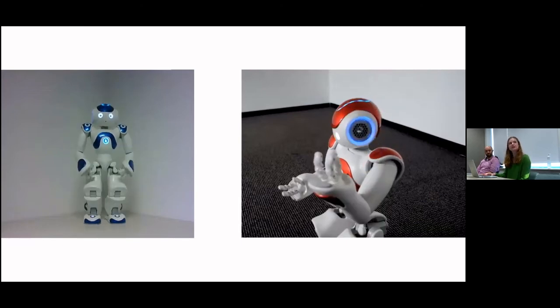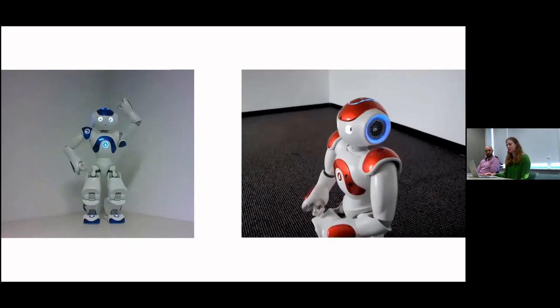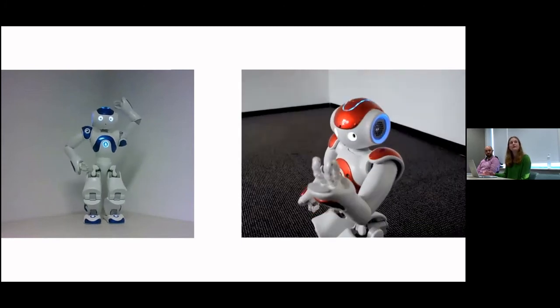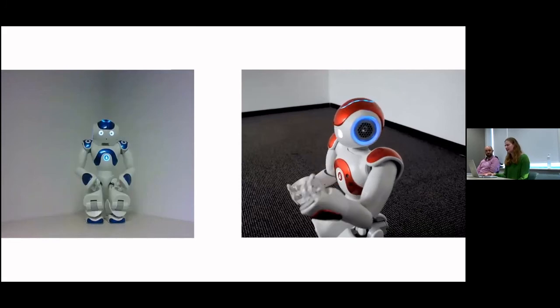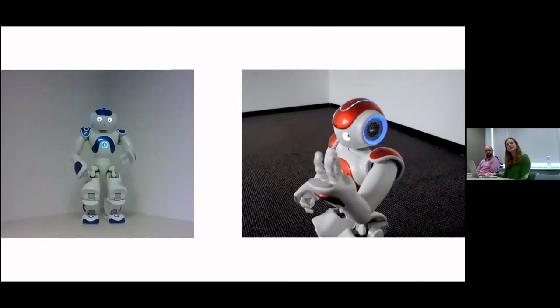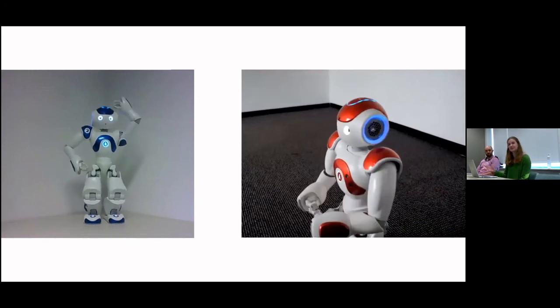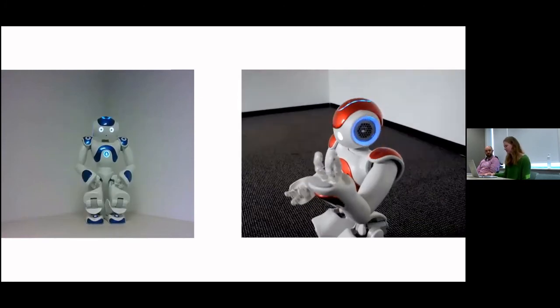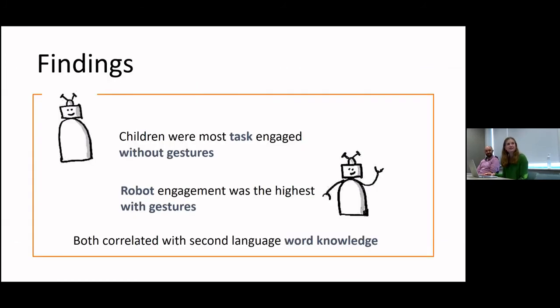We saw that in the results. Children did learn more words with a robot using iconic gestures for very iconic concepts like monkey. But they learned less words when the robot was using iconic gestures for less iconic words such as heavy. What we did find was that children were more engaged with robots, but there was a slight difference. Children were more task engaged with robots without gestures.